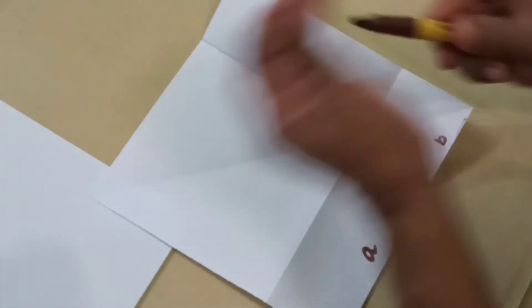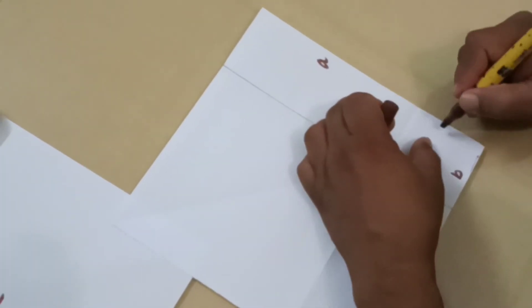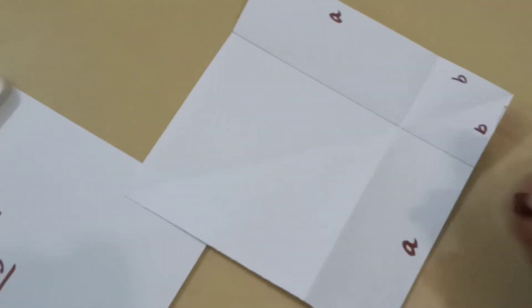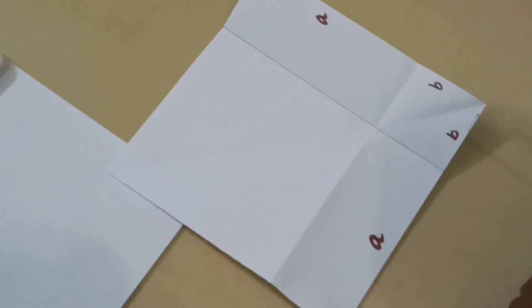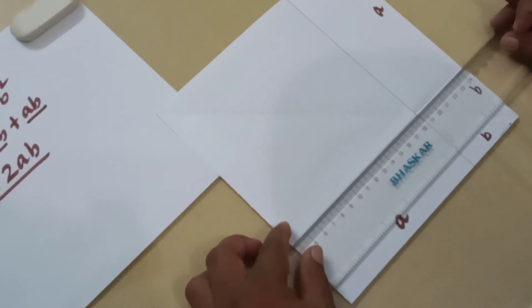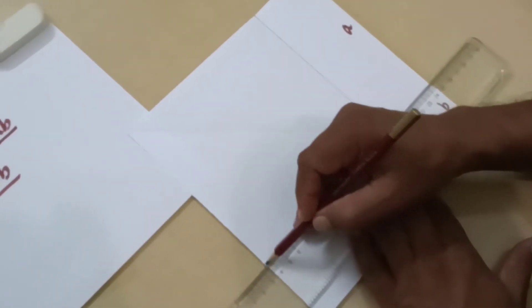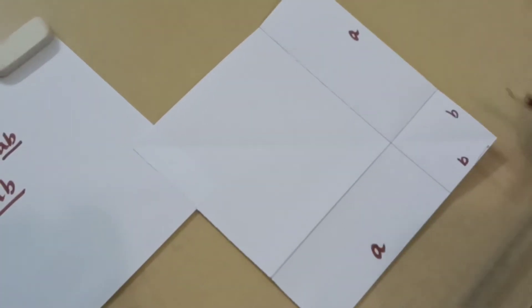So I will write it down. So this is a and this is b. If you are not able to see this line what I will do is I will use the scale and draw it for you. Done.